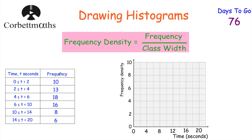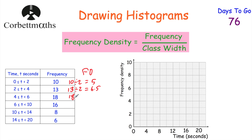For the first group, the frequency is 10 and the class width is 2, so 10 divided by 2 equals 5 — frequency density is 5. For the next group, frequency is 13 divided by class width 2, giving 6.5. Then frequency 18 divided by class width 2 equals 9.